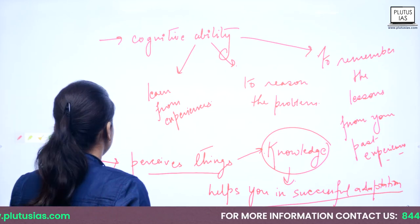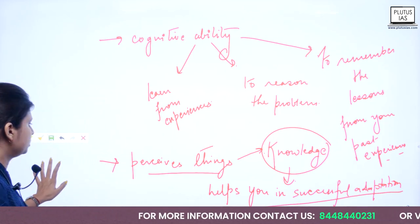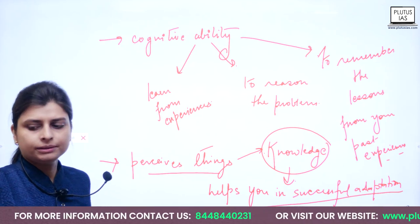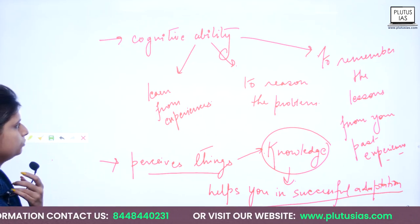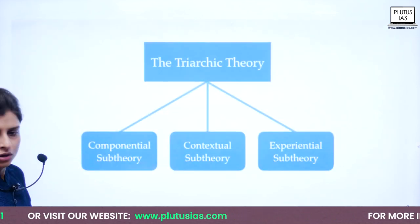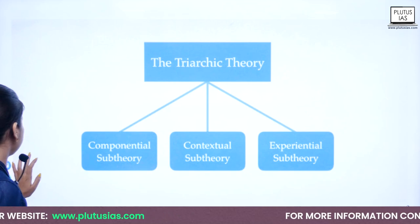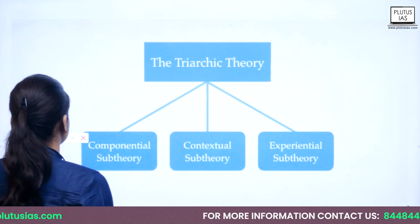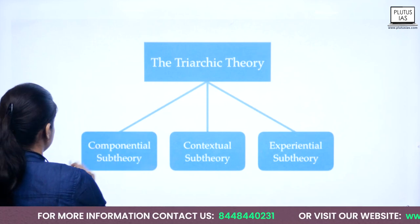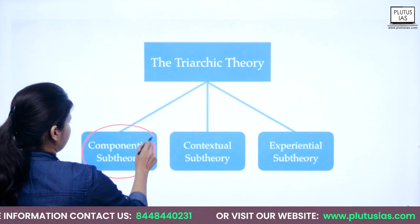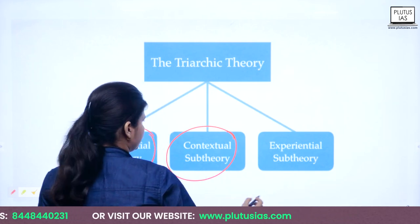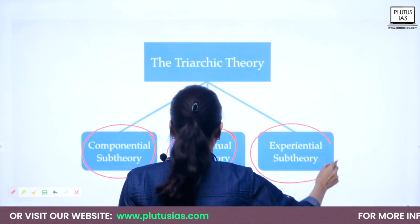Moving further, the Triarchic Theory is confined to three sub-theories: the componential sub-theory, the contextual sub-theory, and the experiential sub-theory.